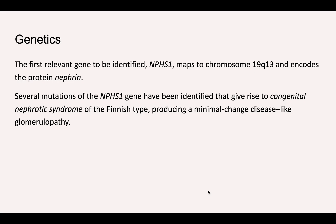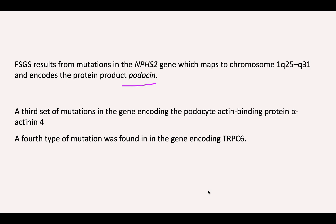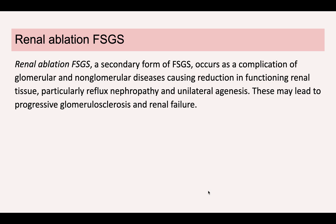Regarding genetic mutations: nephrin mutations lead to minimal change disease morphology (congenital nephrotic syndrome of Finnish type). Podocin is coded by the NPHS2 gene and leads to FSGS morphology. Actin-binding protein mutations and mutations in TRPC6 are also implicated. These are the various genetic mutations that can lead to FSGS-type morphology.